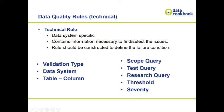When you create a technical rule, you either let us generate the query based on the validation type or you provide the query yourself for more complex rules. We use three queries: a scope query, a test query, and a research query. The scope query asks how many records you have — say, 100,000 people. The test query asks how many of those don't have a birth date — say, 48. So your assessment is 48 out of 100,000. If the threshold is exceeded, the research query — which is optional but powerful — retrieves a sample of the failing records with useful information.